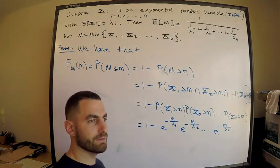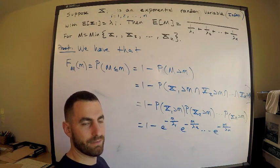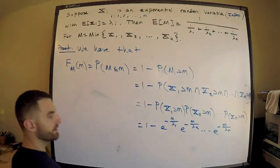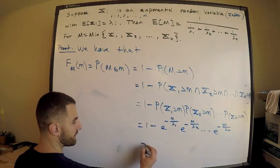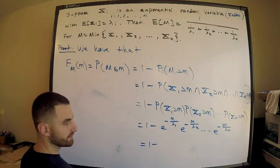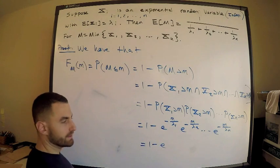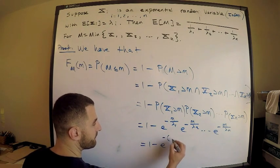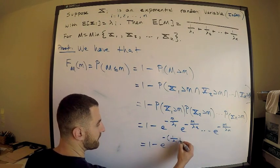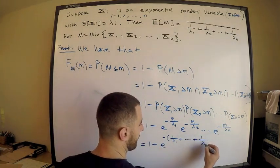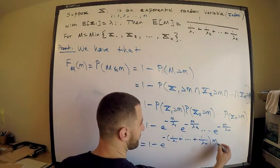You should be saying to yourself, we're done. Thank God I don't want to compute an integral - how annoying is that? I don't want to do that. This is equal to 1 minus e, factor out an m, to the negative (1 over lambda_1 plus all the way down to 1 over lambda_n) times m.